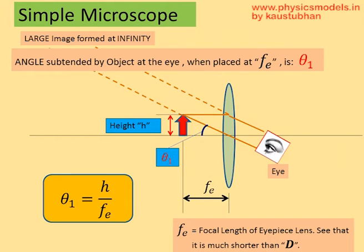Now, we insert a convex lens between the eye and the object. So we have a microscope here, a simple microscope. On top of that, we do a second thing.